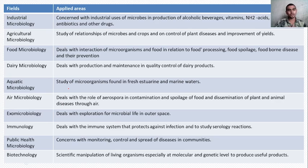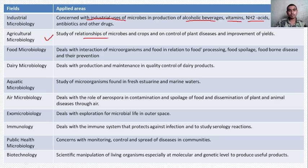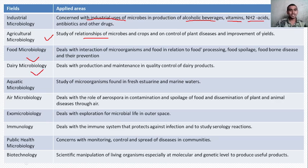Some major fields of microbiology and their applied areas include: industrial microbiology — concerned with industrial uses of microbes in the production of alcoholic beverages, vitamins, amino acids, enzymes, antibiotics, and other drugs; agricultural microbiology — study of microbes and crops, control of plant diseases, and prevention of yield loss; food microbiology — deals with interaction of microorganisms and food in relation to food processing, food spoilage, foodborne diseases, and their prevention; dairy microbiology — production, maintenance, and quality control of dairy products.